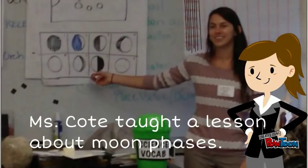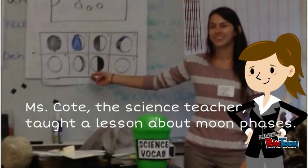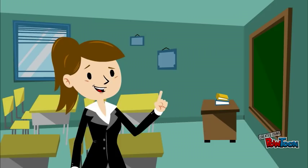Remember, an appositive renames the noun beside it, so in this sentence, Miss Cody, the science teacher, taught a lesson about moon phases. The science teacher is the appositive because the science teacher renames the noun Miss Cody.